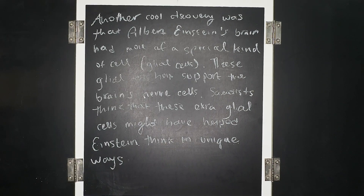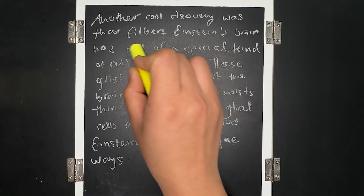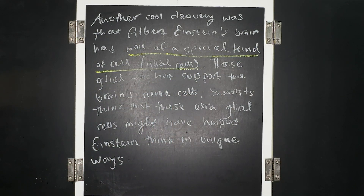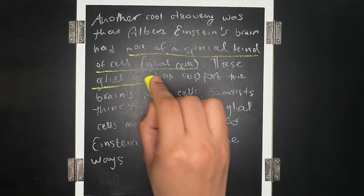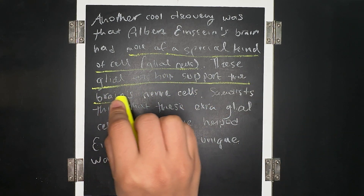For this paragraph, did you figure out the sentences? That's right — the presence of glial cells, and not only that, but also what the glial cells do, which is help support the brain's nerve cells.